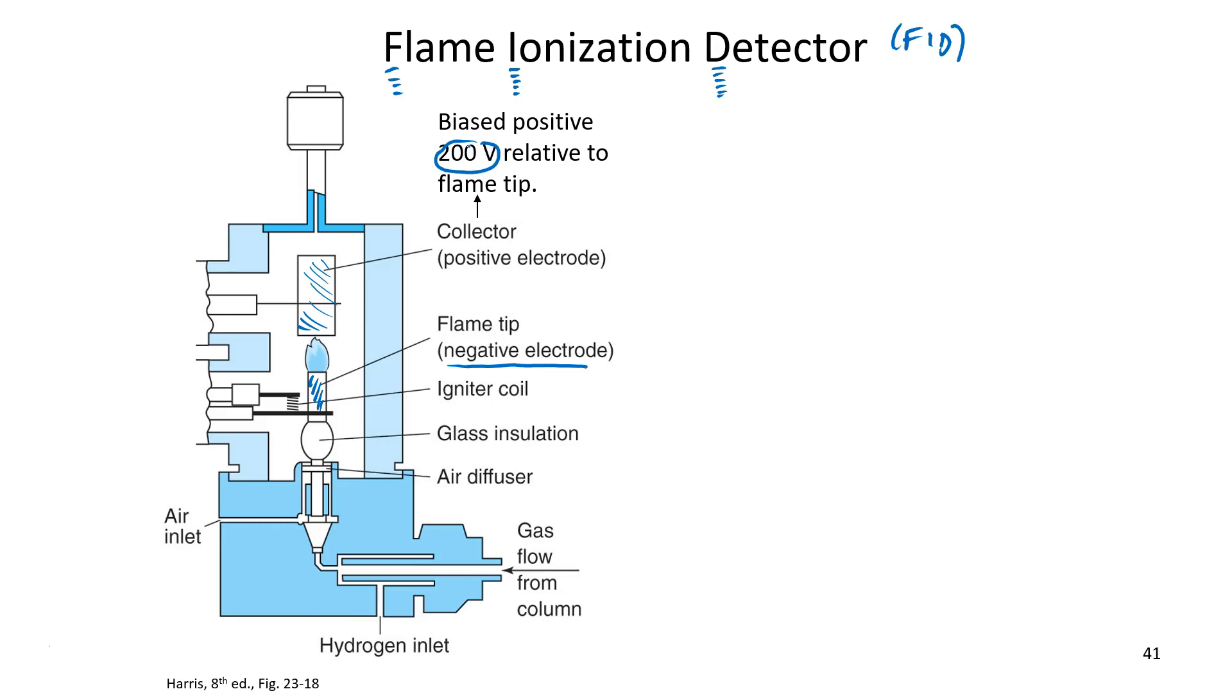So, what exactly happens here? Well, again, imagine mobile phase flowing through, and that's kind of your background signal. You get a constant current across the flame tip and the collector electrodes of about 10 to the negative 14 amps. So again, that's just your background.